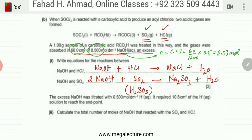These are the moles of NaOH that reacted with HCl and SO2, but there's going to be leftover NaOH as well because it is in excess. The remaining leftover NaOH was then titrated with 0.5 mol per dm³ of H⁺, and it required 10.8 cm³ of H⁺ solution to reach the endpoint.